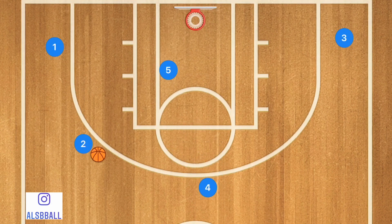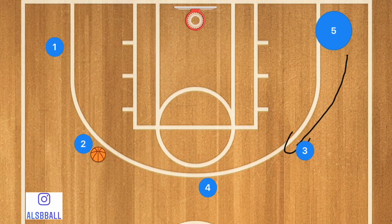If player 5 is open, hit him up for that layup. If that's not open, player 3 pops up, player 5 fills out, and we are back into the 5-out offense.